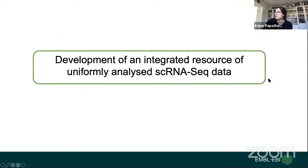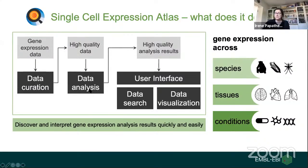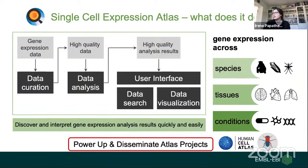Now I'll go into how we developed this integrated resource of uniformly analyzed single cell RNA-seq data, following exactly the same workflow as for bulk datasets: sourcing relevant raw data and metadata, annotating them with ontology identifiers so we can combine and search for them, performing standardized data analysis, and providing results through the user interface. Importantly, we also power and disseminate atlas projects — you may have heard of the Human Cell Atlas, the Fly Cell Atlas, and also Tabula Muris.